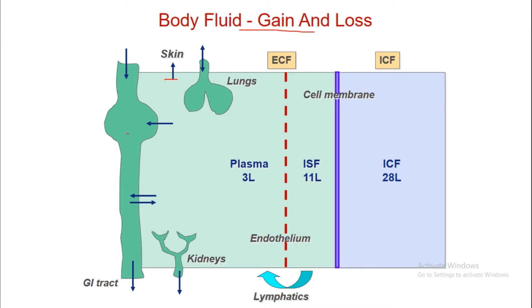Body fluid gain and loss: the GI tract is both a fluid gain and fluid loss system; the kidney is a fluid loss or fluid preservation system; lungs contribute to fluid gain or loss in both directions; and the skin is an absolute loss system. Fluid gain or loss mainly occurs via the plasma, with minimal change in ICF or interstitial fluid under normal conditions, but disease states can disrupt this balance.